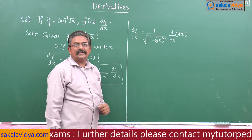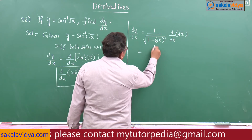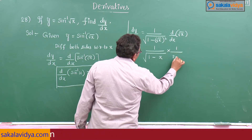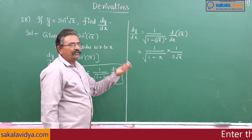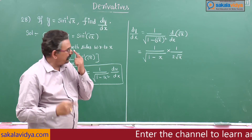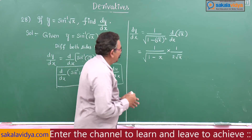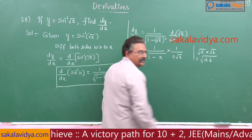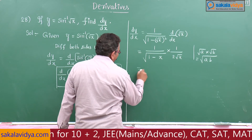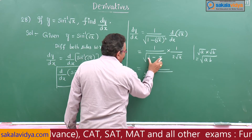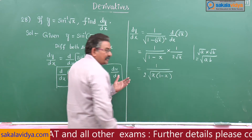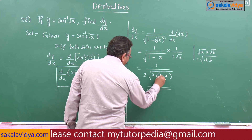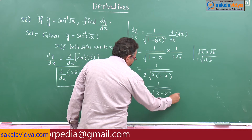Now, what is the value of root x squared? It is x. So this equals 1 by root of (1 minus x) into 1 by 2 root x. Using the formula root a into root b equals root of ab, we can write this as 1 by 2 times root of x(1 minus x), which can be further simplified to 1 by 2 root of (x minus x square). This is the answer.